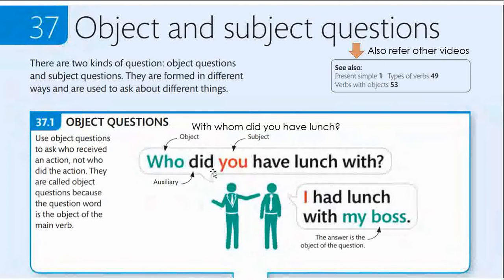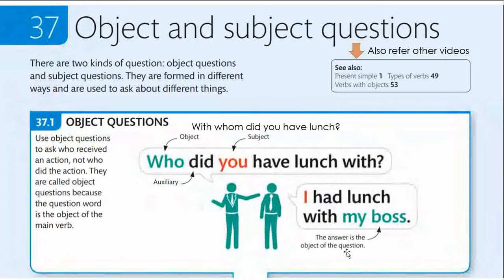Make a note of this: 'did' is an essential part of an object question. Without the word 'did,' the object question cannot be formed. 'Who did you have lunch with?' — here my interest is to find out the name of the person who was the recipient of the action of having lunch. The answer 'I had lunch with my boss' gives us the object of the question 'who.'